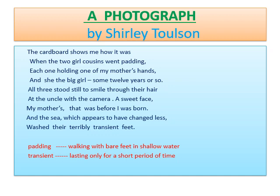The poem starts with how an old photograph pasted on a cardboard makes the poet recall the memories of her mother. The photograph was of her mother when she had gone on a sea beach holiday with her two cousins. The photograph depicts her mother's enjoyable moments at the beach with her two cousins who were younger to her. They went paddling in the sea, holding the poet's mother's hand, who was about twelve years old then. All three girls were smiling in the photograph, and as it was windy, their hair were flying over their smiling faces. The photograph had been clicked by her uncle's camera. Her mother's face was very sweet and charming, and the photograph was taken before the poet was born.